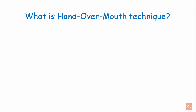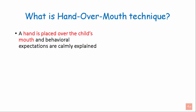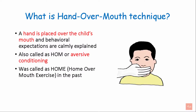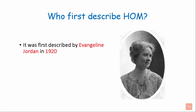Now let's see in detail what is the hand over mouth technique. A hand is placed over a child's mouth and behavioral expectations are calmly explained. This is also called HOM, or aversive conditioning. It was called HOM in the past and was first described by Evangeline Jordan in 1920.